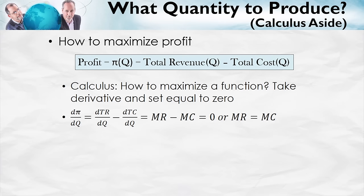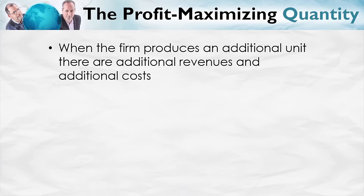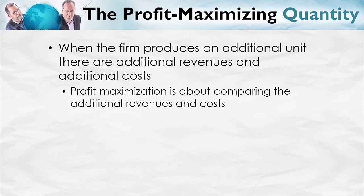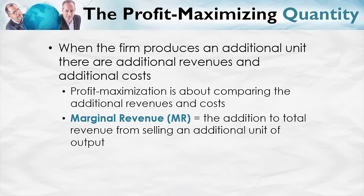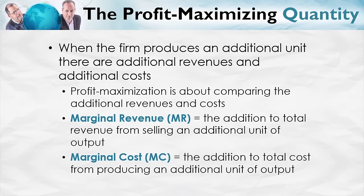Now for a more intuitive explanation: when the firm produces an additional unit of output, there are additional revenues and additional costs. Marginal revenue is the addition to total revenue from selling an additional unit of output. Marginal cost is the addition to total cost from producing an additional unit of output.